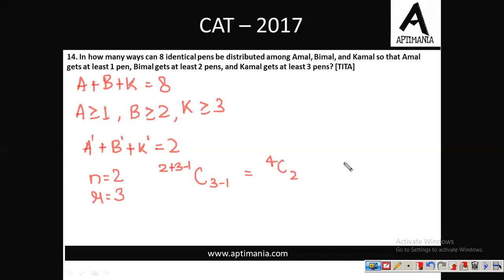The total number of ways of distributing the pens among Amal, Vimal and Kamal is 6. So the correct answer for question number 14 is 6.